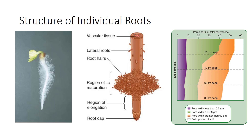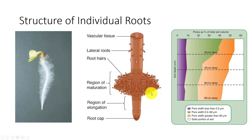Roots grow from an apical meristem at the tip. The root apical meristem is protected by the root cap. Just behind the root cap and root apical meristem is a short zone of elongation. These cells undergo division and expansion. The root hair zone is a region in which many of the epidermal cells extend out as narrow trichomes, increasing the root surface area. Roots that are at least 100 micrometers in diameter are too wide to penetrate many pores in the soil.